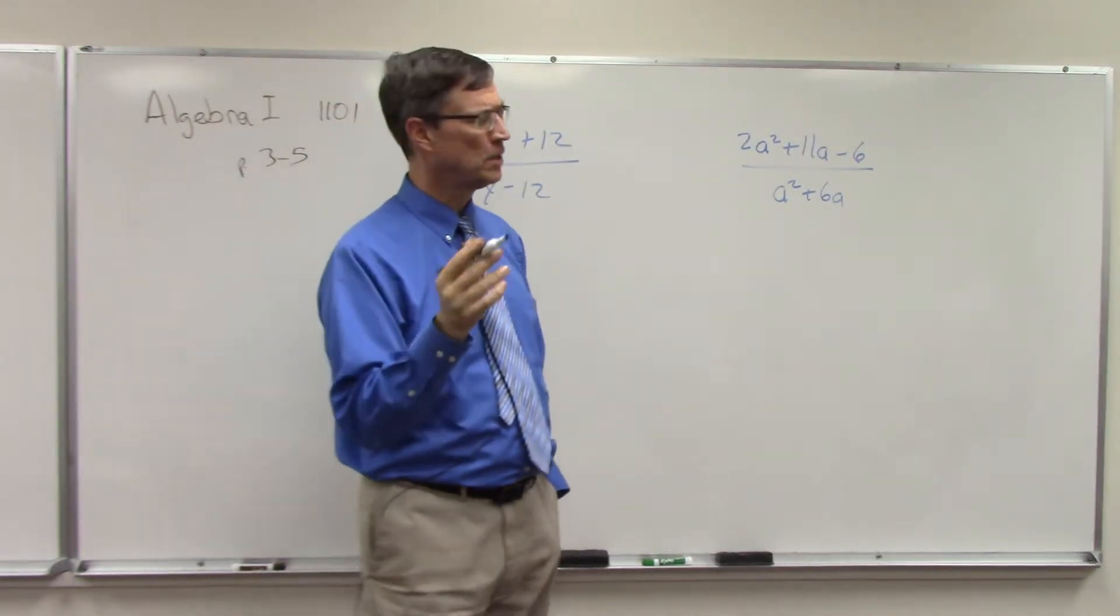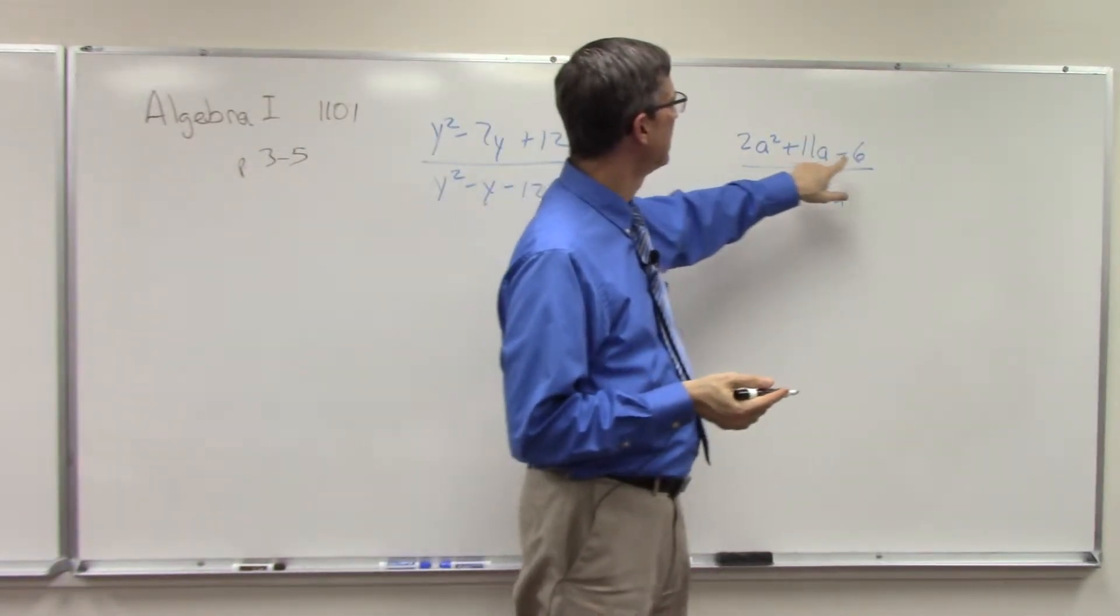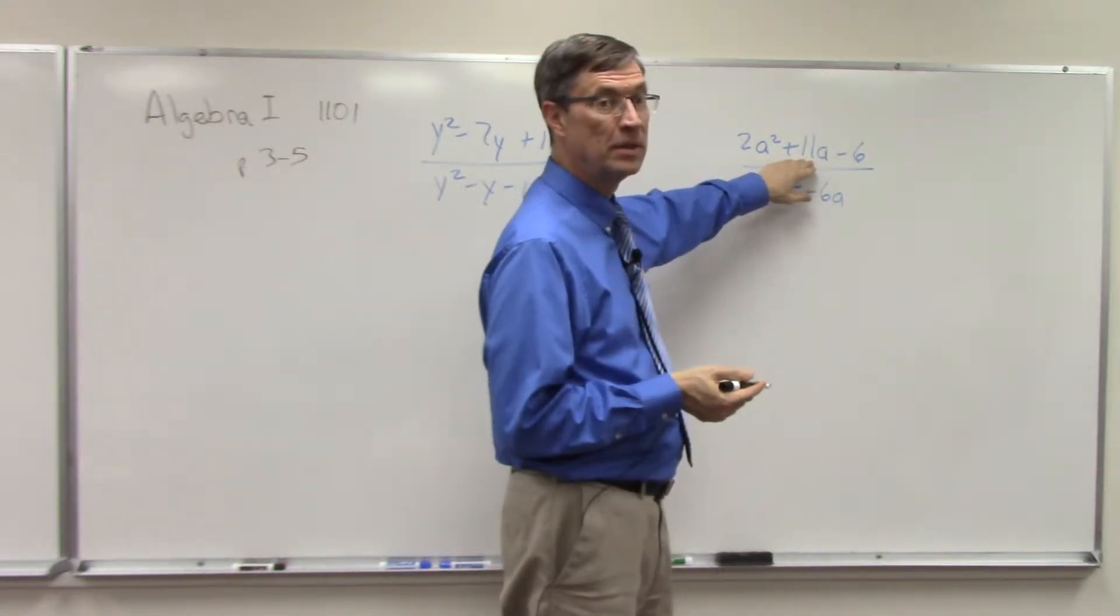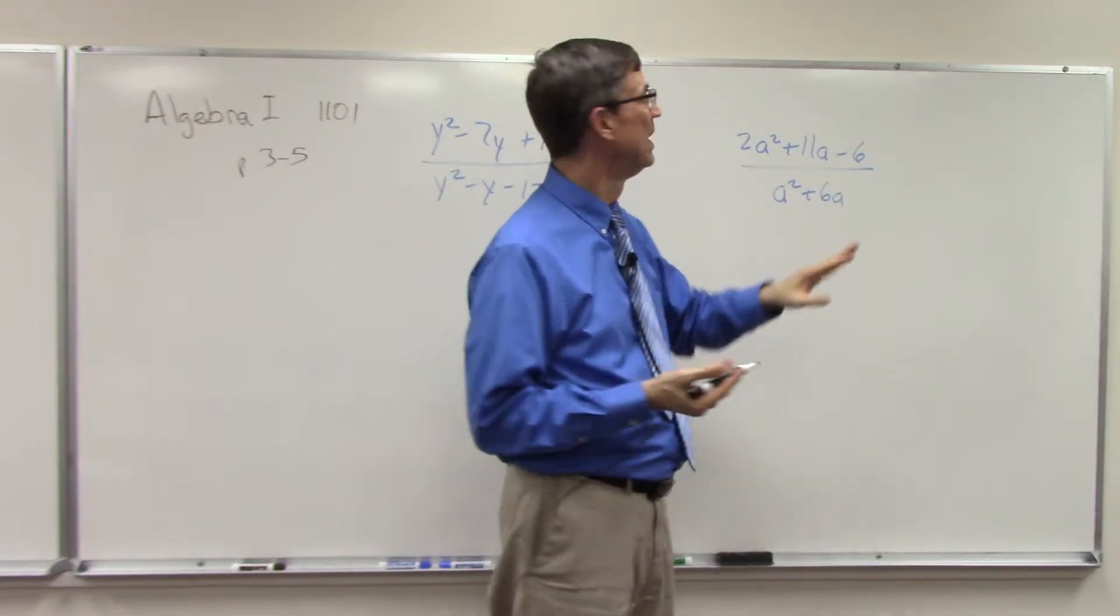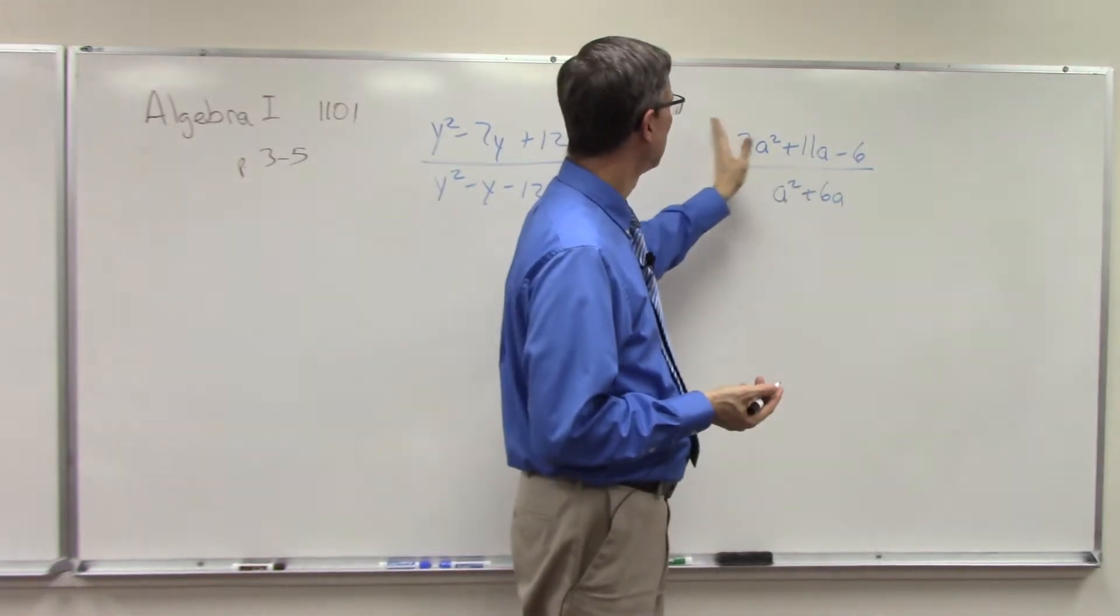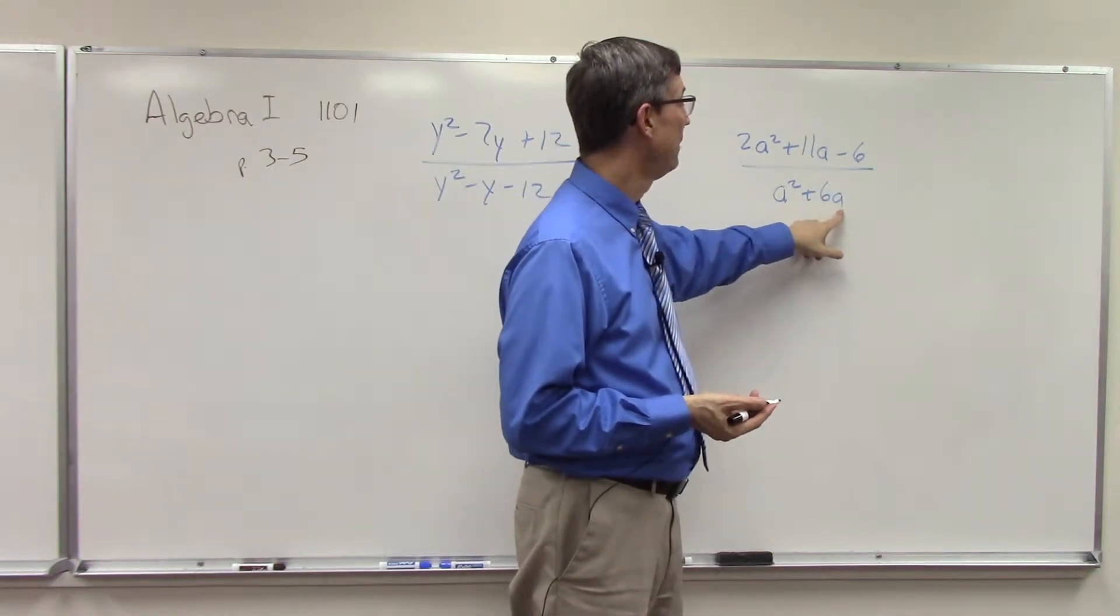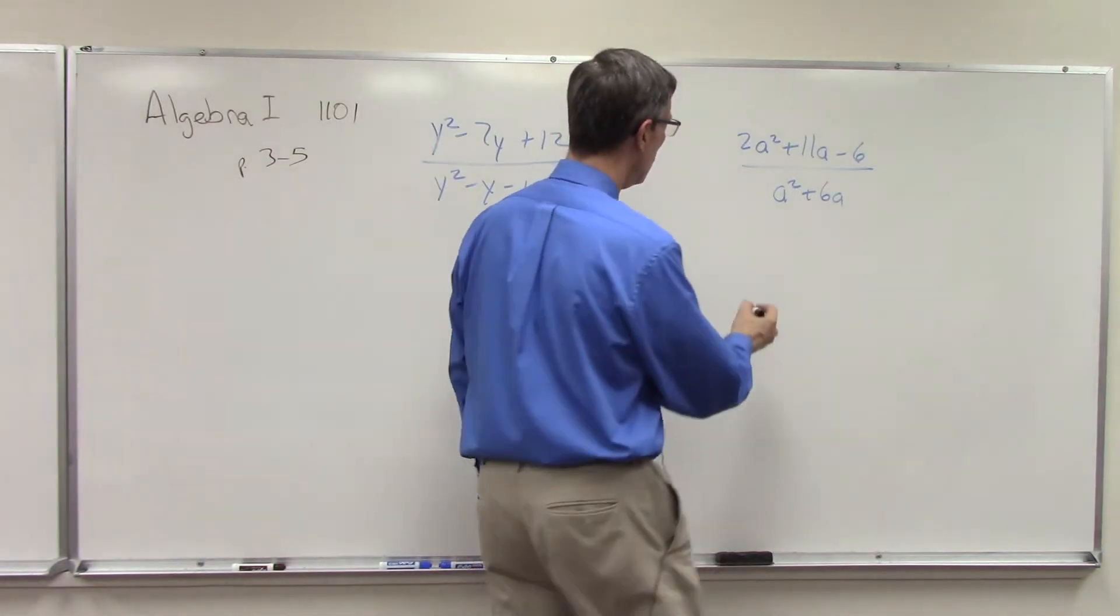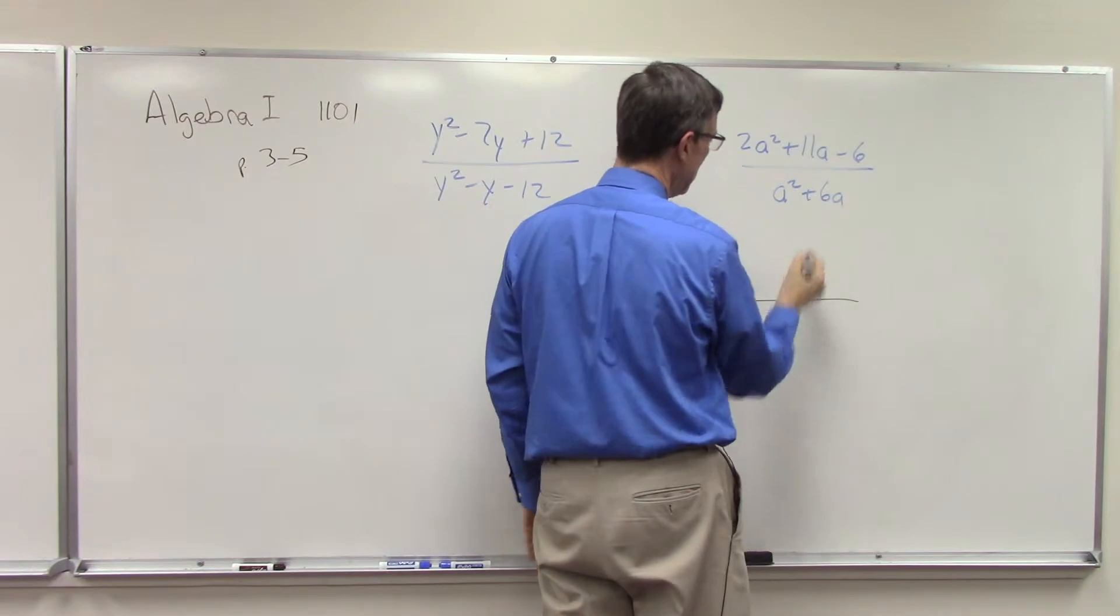Like for instance here, I see 2 could come out of here and here. If this were a 12 or a 10, something like that, I could factor 2 out of the whole thing. Okay, because I have 11 here, I can't factor 2 out. But look down here, do you see a common factor that we can take out? Yep, so I'm actually starting over here and then we'll come back over here.